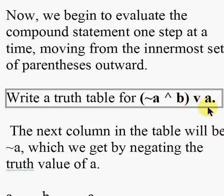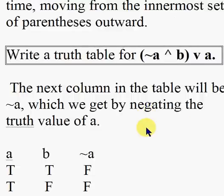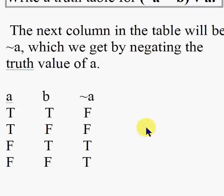The next column in the table will be ~a, which we get by negating the truth value of a. Not-a is simply changing the true to false and the false to true. So the trues become false and the falses become true.